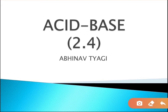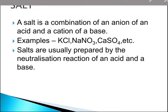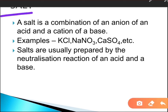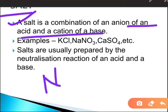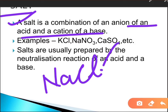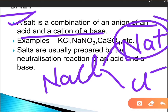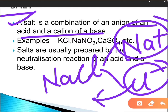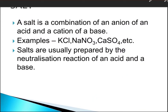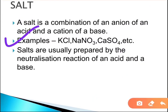First, what is a salt? A salt is a combination of the anion of an acid and the cation of a base. For example, NaCl has Na⁺ and Cl⁻, where Na comes from NaOH and Cl comes from HCl. Some examples of salts are KCl, NaNO3, and CaSO4.